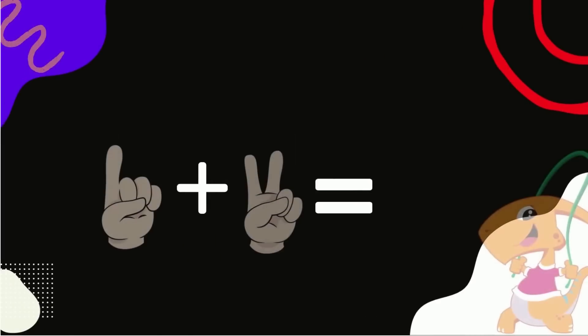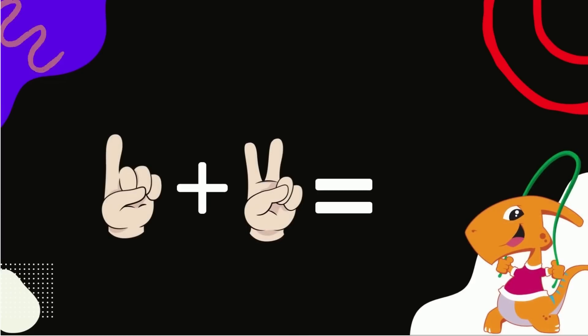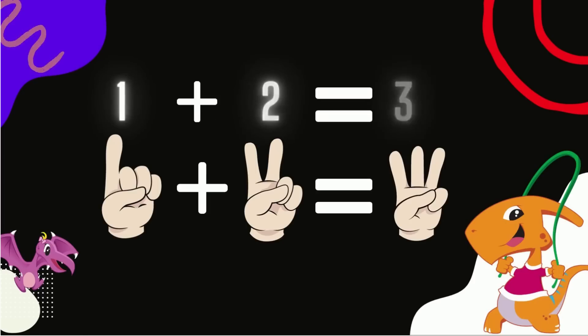Take one finger out in one hand and two fingers out in the other hand. Let's count. One, two, three. We have three in total. One add two equals three.